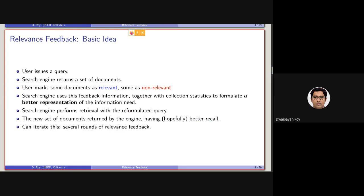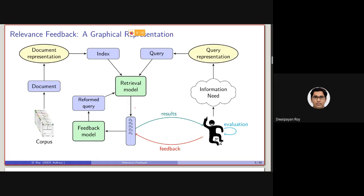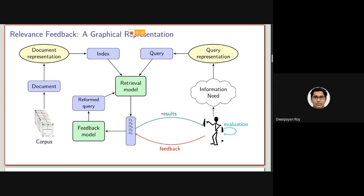This iteration can be repeated more than once. Using the new set of documents, the user can again be asked to mark documents as relevant and non-relevant. The feedback model can again reformulate the query and perform another retrieval, with the expectation that it will further improve performance. So we can iterate the relevance feedback step more than once.